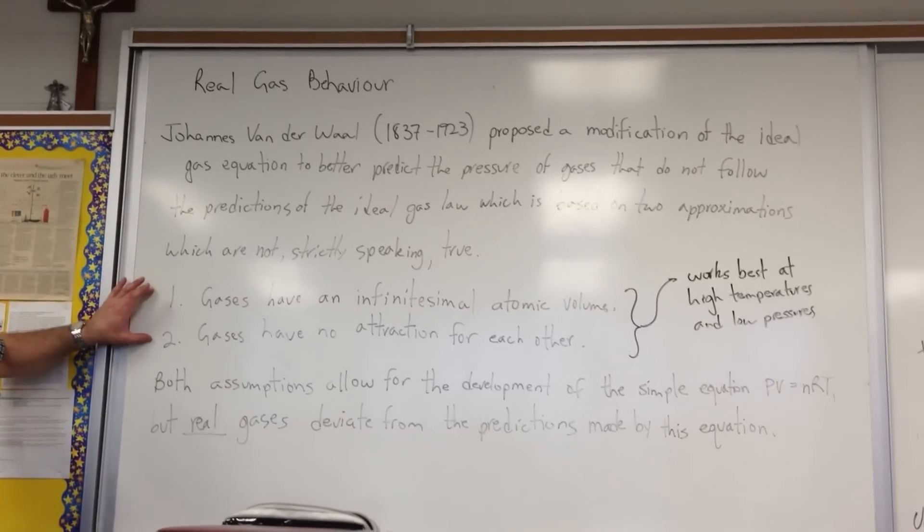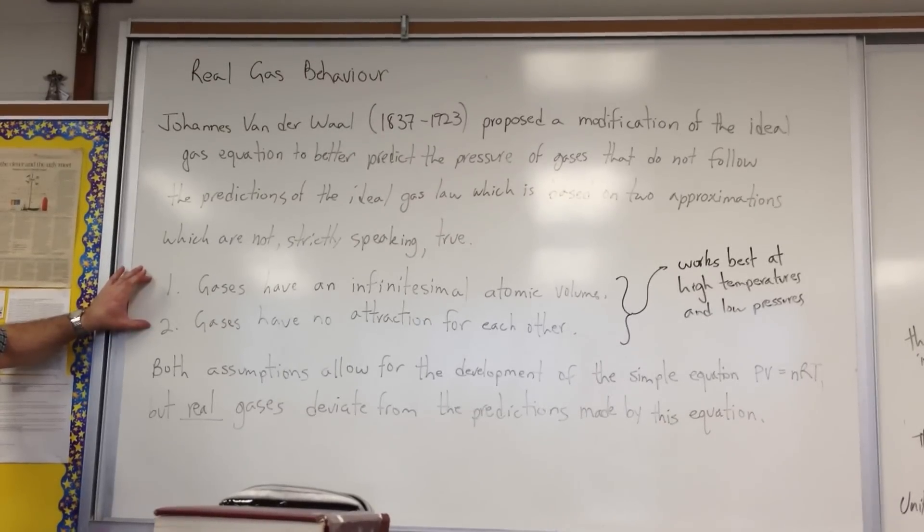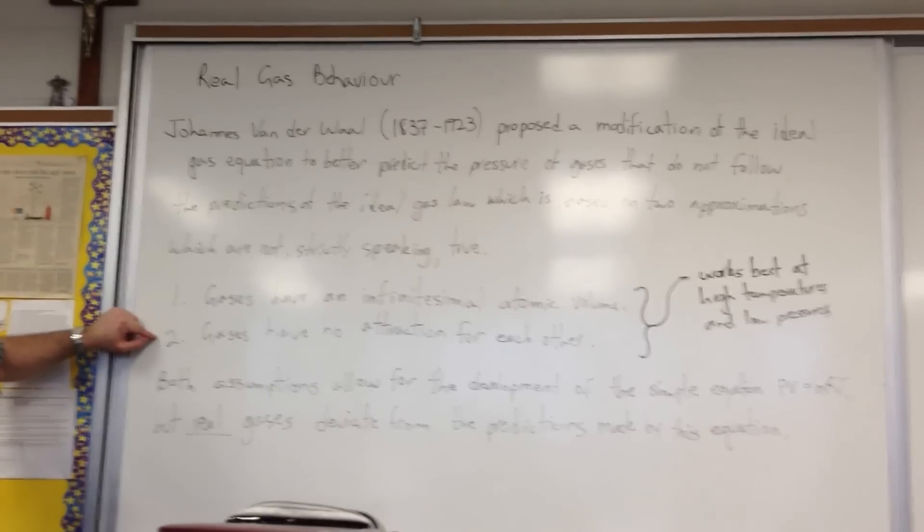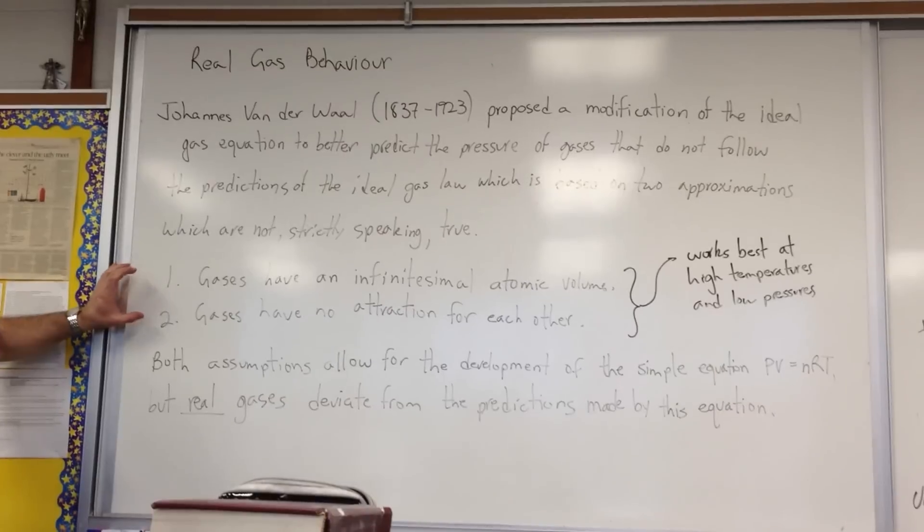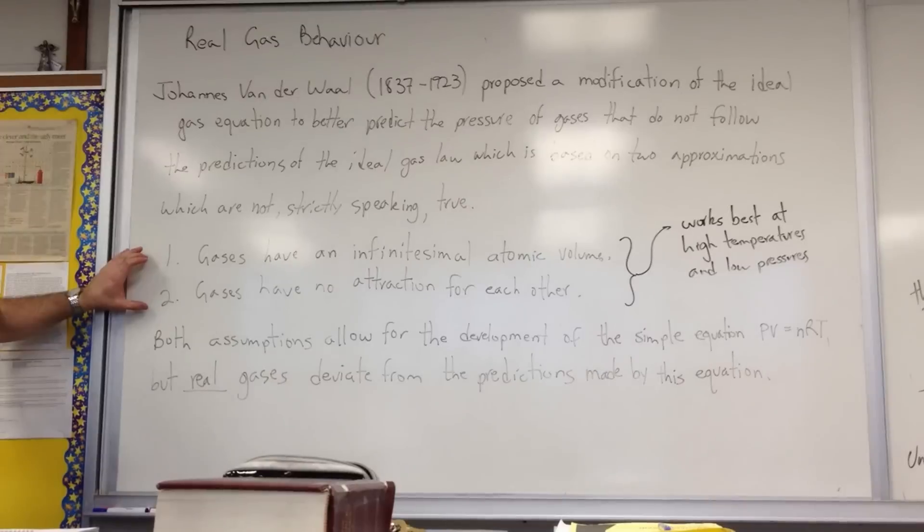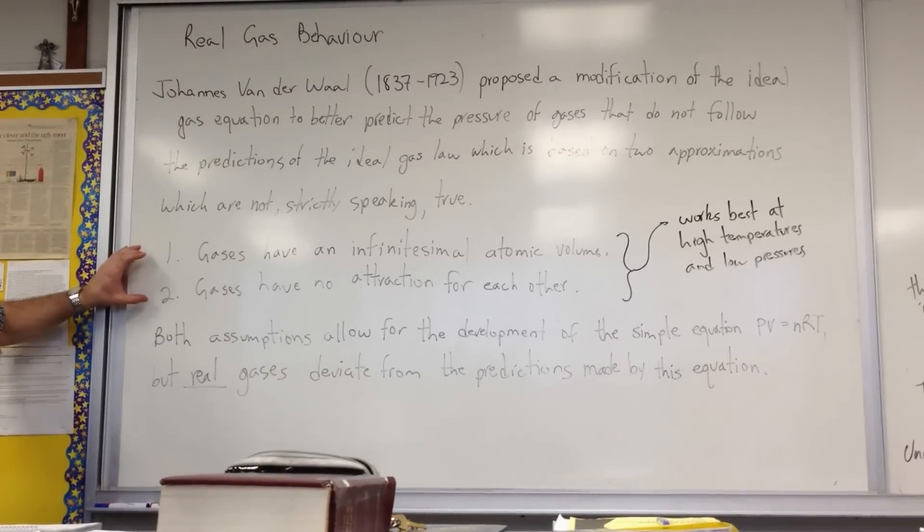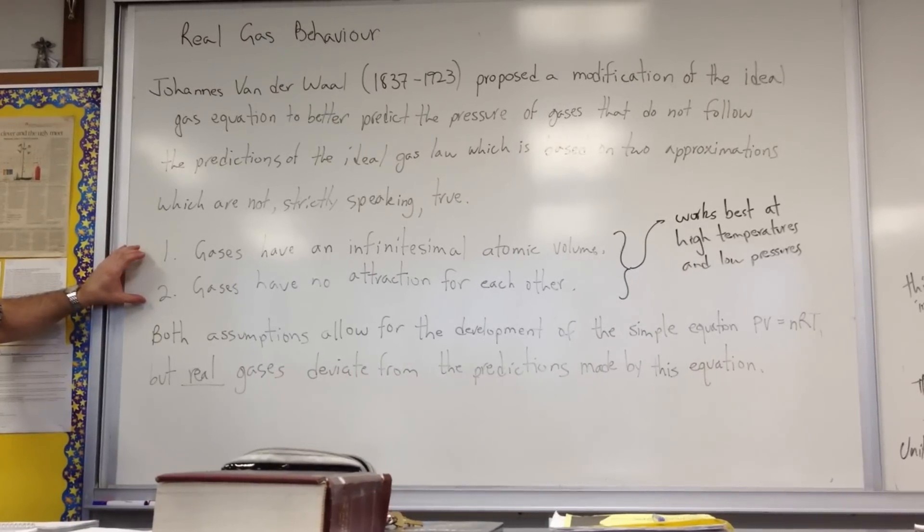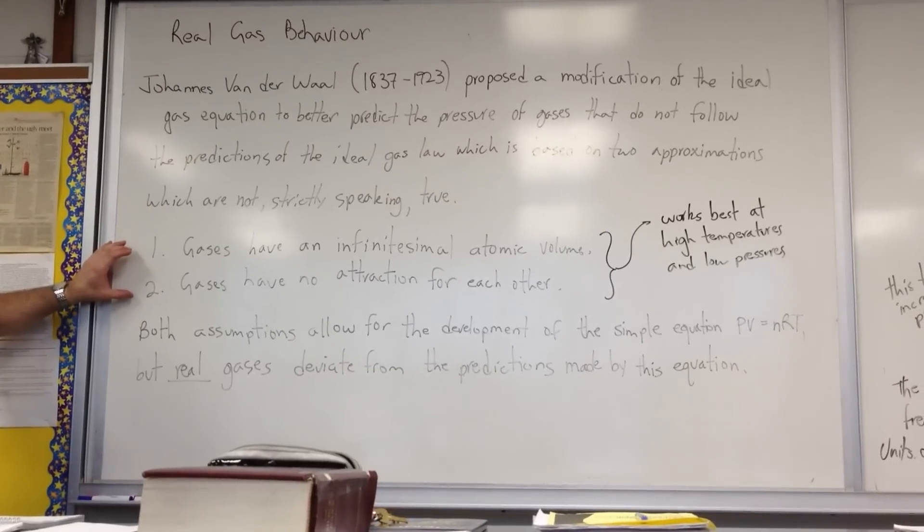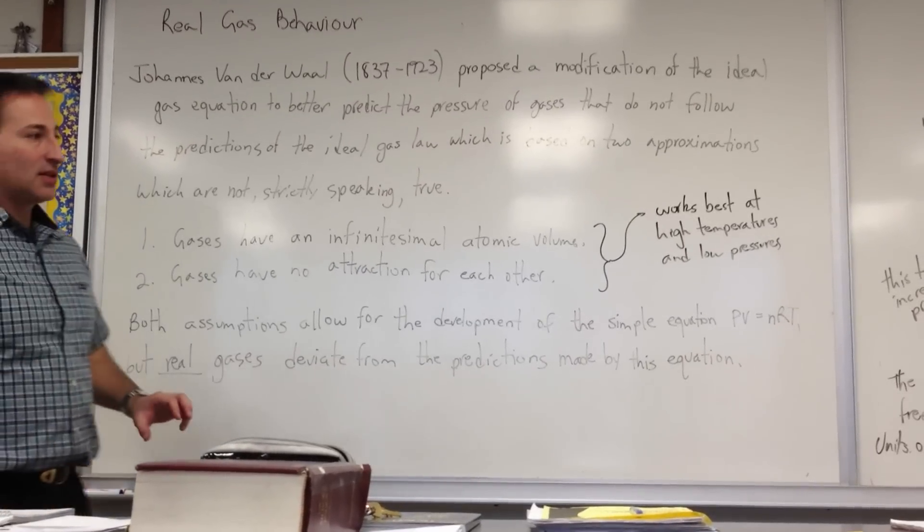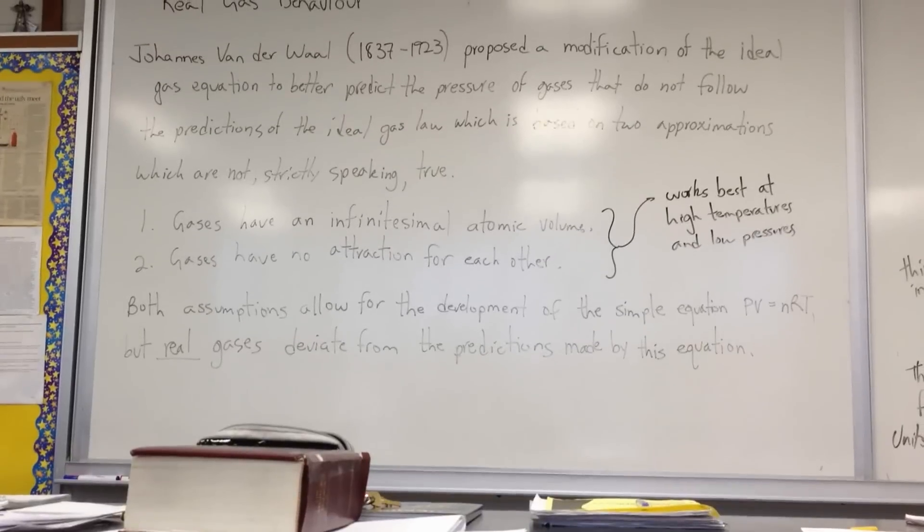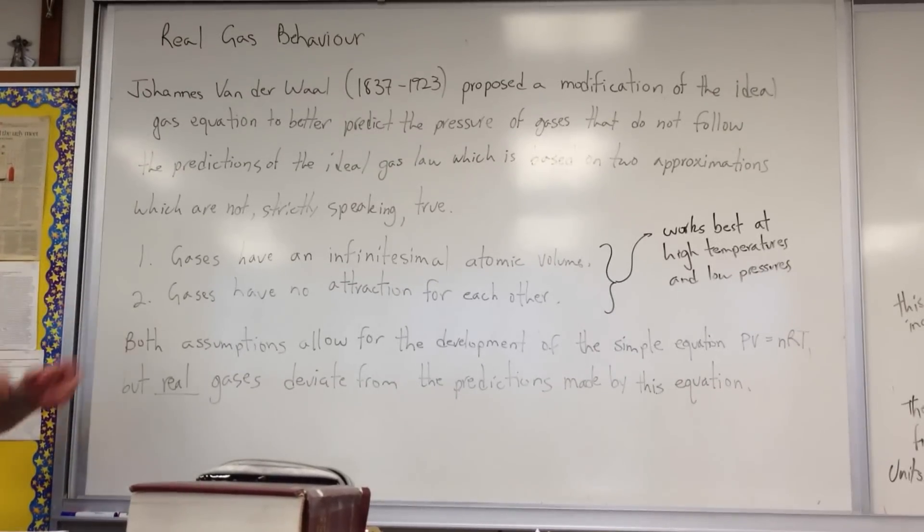Those two approximations are that gases have an infinitesimal atomic volume, meaning that they actually occupy no volume, and the second assumption was that gases have no attraction for each other. These two assumptions were necessary to do the statistical calculations to predict the pressure exerted by a gas as though the gas were a spherical solid bouncing around that doesn't lose any energy. So with those approximations, they were able to predict a ballpark pressure for what they call an ideal gas.